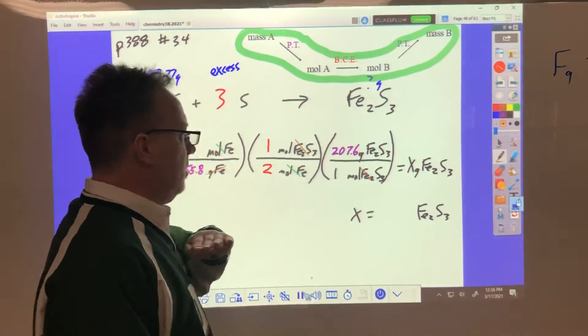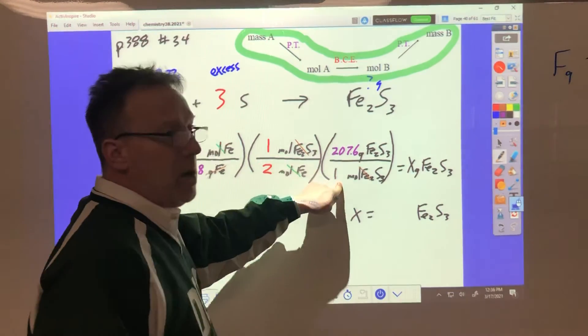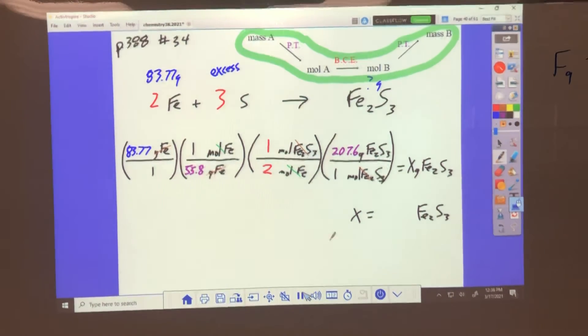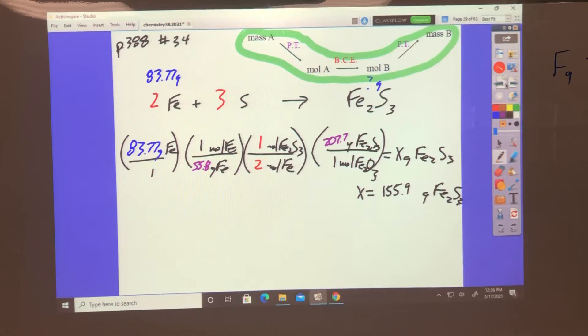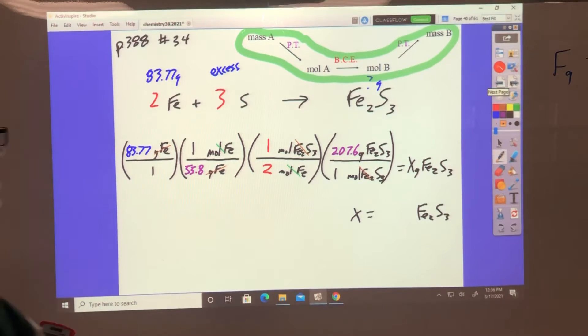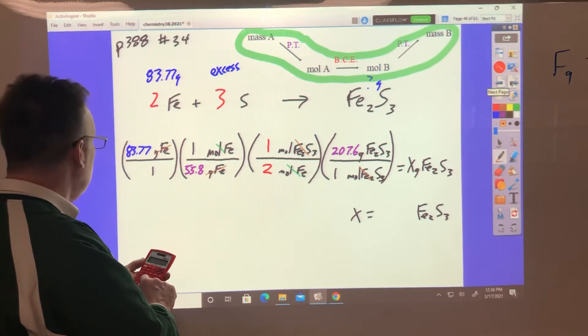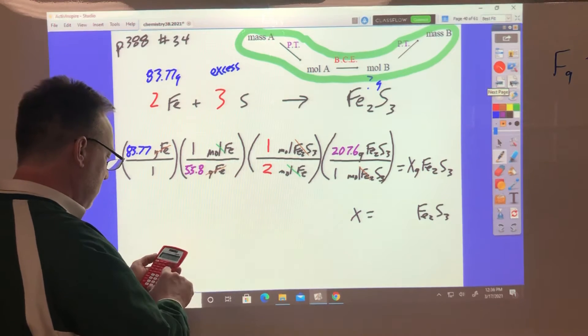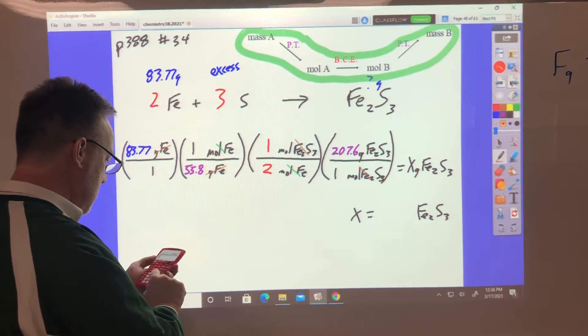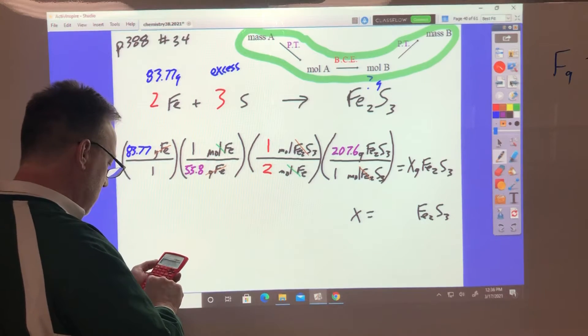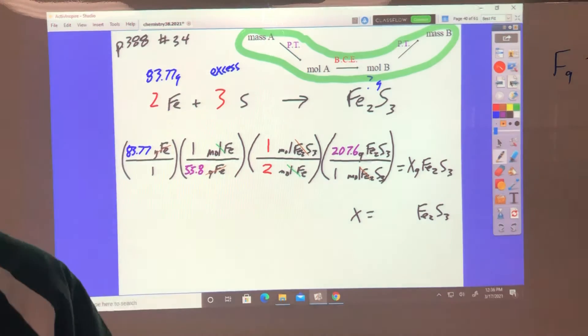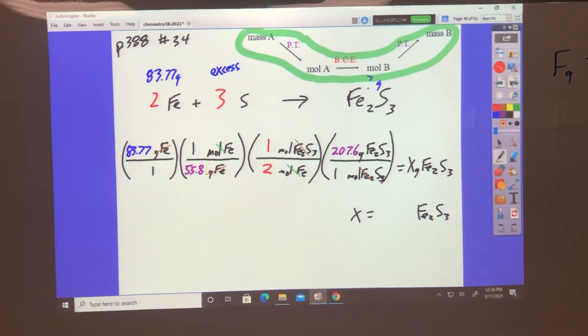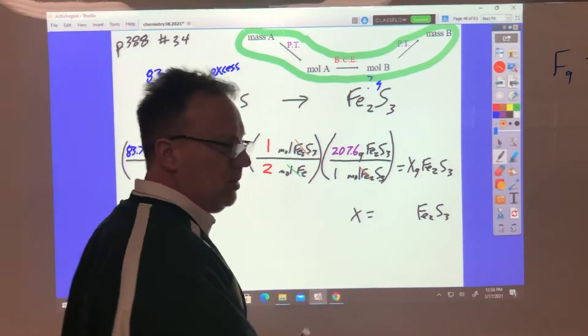Then multiply all the tops, write it down, then divide. Let me check to make sure my number is right before I go on. Close enough. So I take 207.6 times 83.77 equals times 1 times 1, divided by 55.8, enter, and divide by 2 again. So I have 155.8 grams.